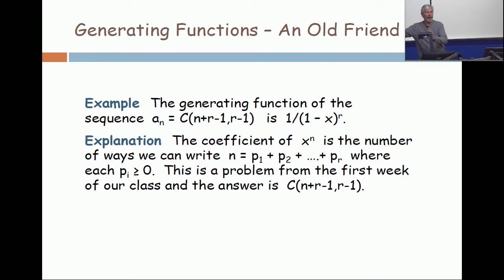Now I can tell the difference. First factor, second factor, third factor, up to r factor. So that is a distribution of the n non-distinct objects into r distinct cells, but with cells allowed to be empty.